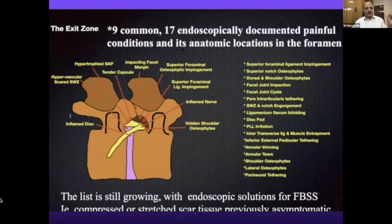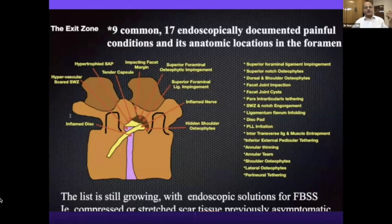This slide from Professor Young beautifully explains the reasons for foraminal pain. It can be an inflamed disc, hypervascular structures in the axilla, a hypertrophic facet capsule, impacting facet margins, superior foraminal osteophytes, or calcified superior foraminal ligaments. Many ligaments can entrap the nerve. Once entrapped, it becomes more edematous and inflamed — that's why steroid injections give good diagnostic and therapeutic relief.